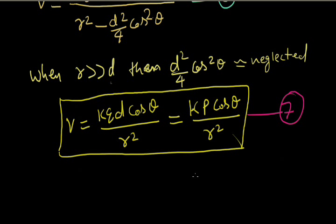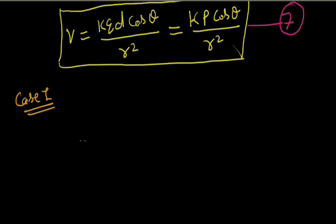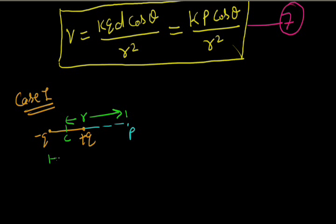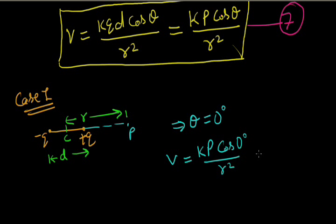We have obtained the electric potential due to an electric dipole at point P, at r distance from the center of the dipole. Now take two special cases. Case 1: when point P is on the axis of the dipole. Here, theta equals 0 degrees, so V equals kp cos 0 upon r squared. Since cos 0 is 1, V equals kp upon r squared.